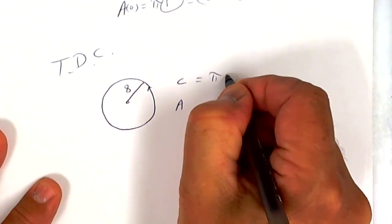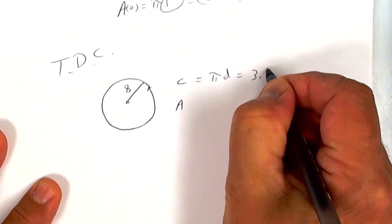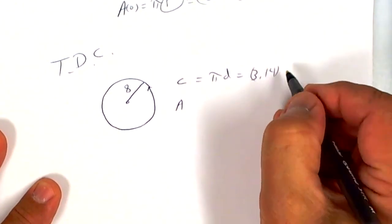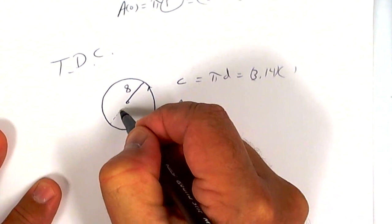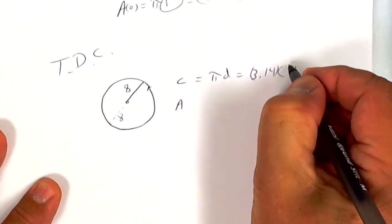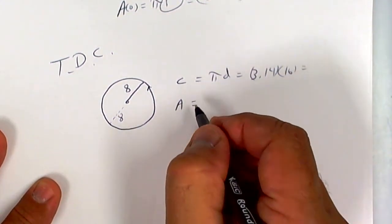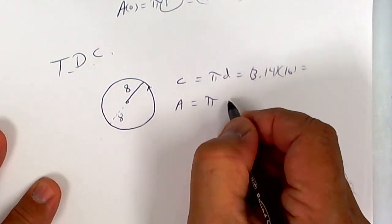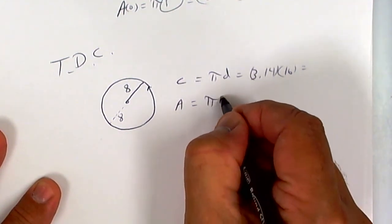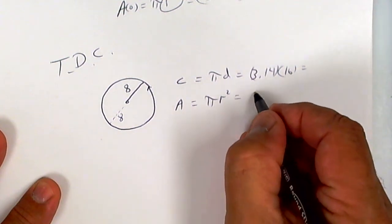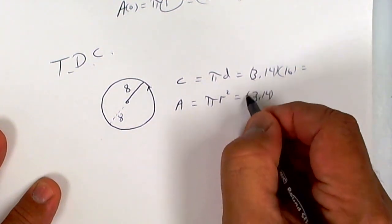Circumference is pi times diameter, so that's 3.14 times the diameter. The diameter is 8 plus 8, so that's 16. We're going to get the calculator in a minute. Area of a circle is pi radius squared, so the radius squared is 3.14 times 8 times 8, because 8 times 8 is radius squared.